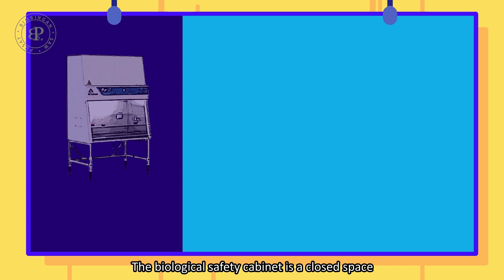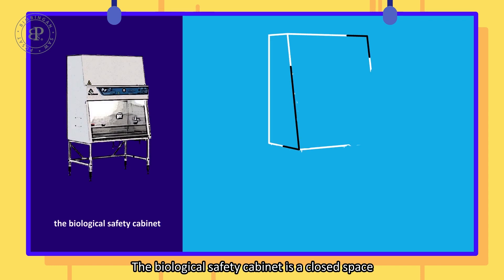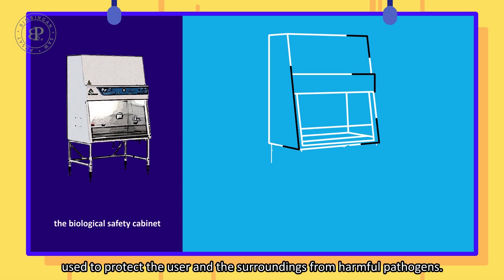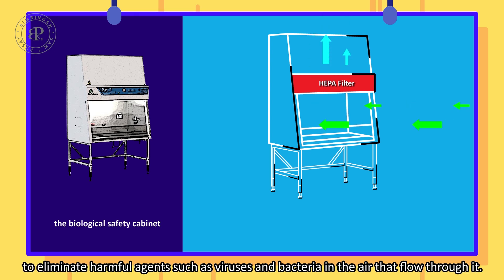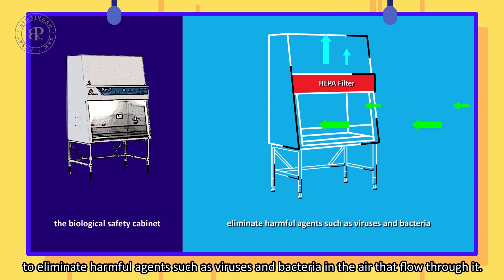The biological safety cabinet is a closed space used to protect the user and the surroundings from harmful pathogens. A HEPA filter is installed in a biological safety cabinet to eliminate harmful agents such as viruses and bacteria in the air that flow through it.